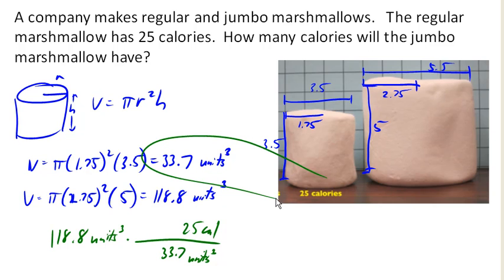So our volume cancels and we end up with 118.8 times 25 divided by 33.7 is about 88.1 calories.